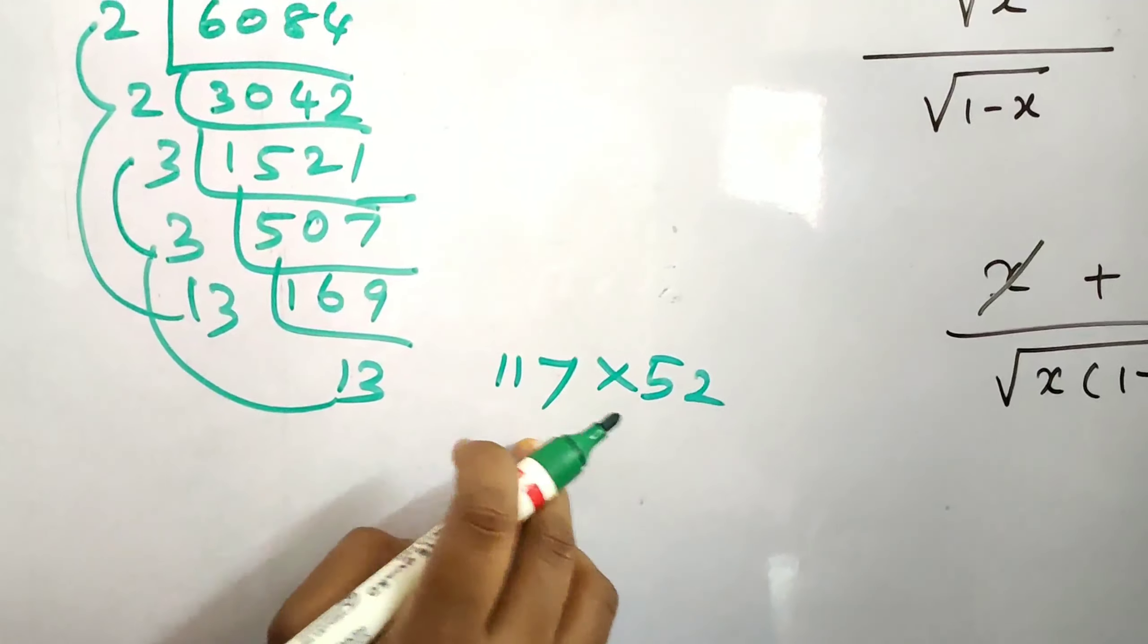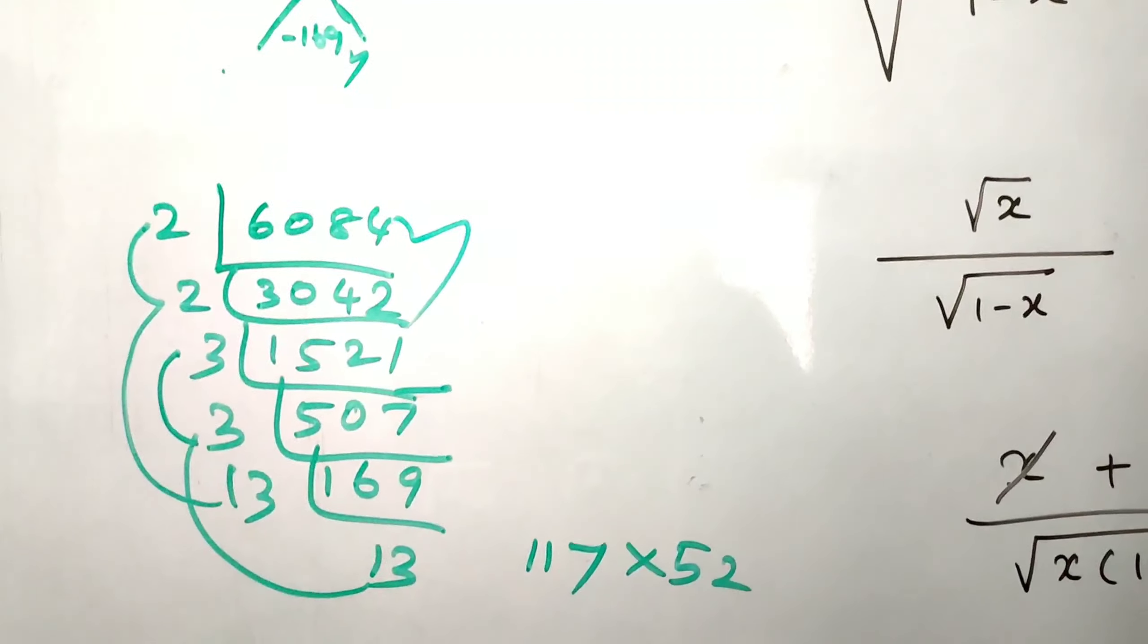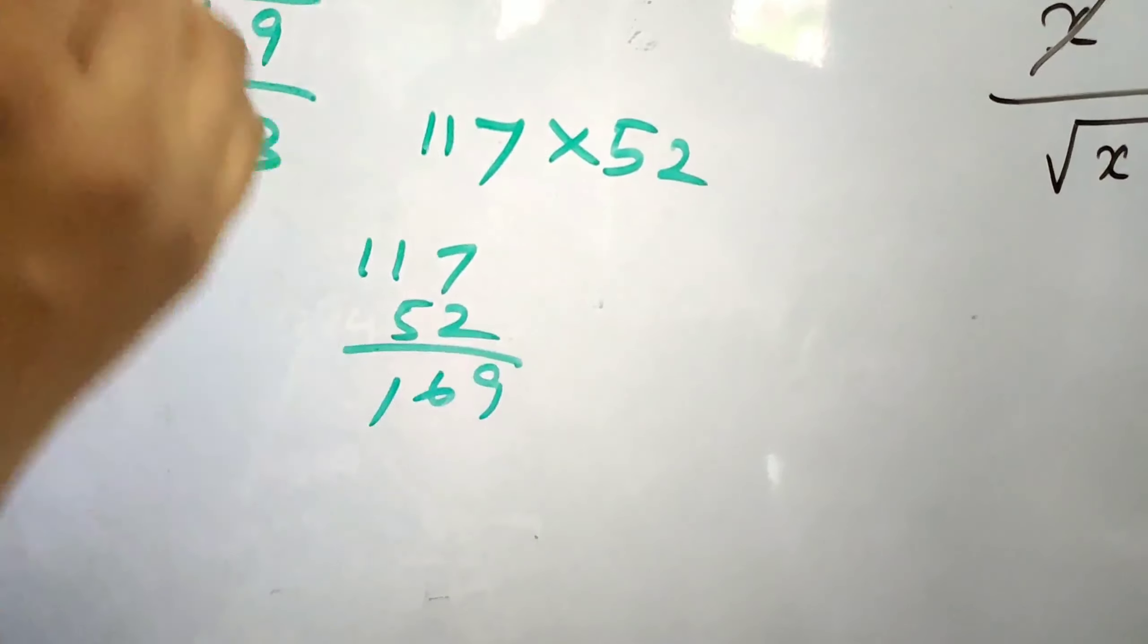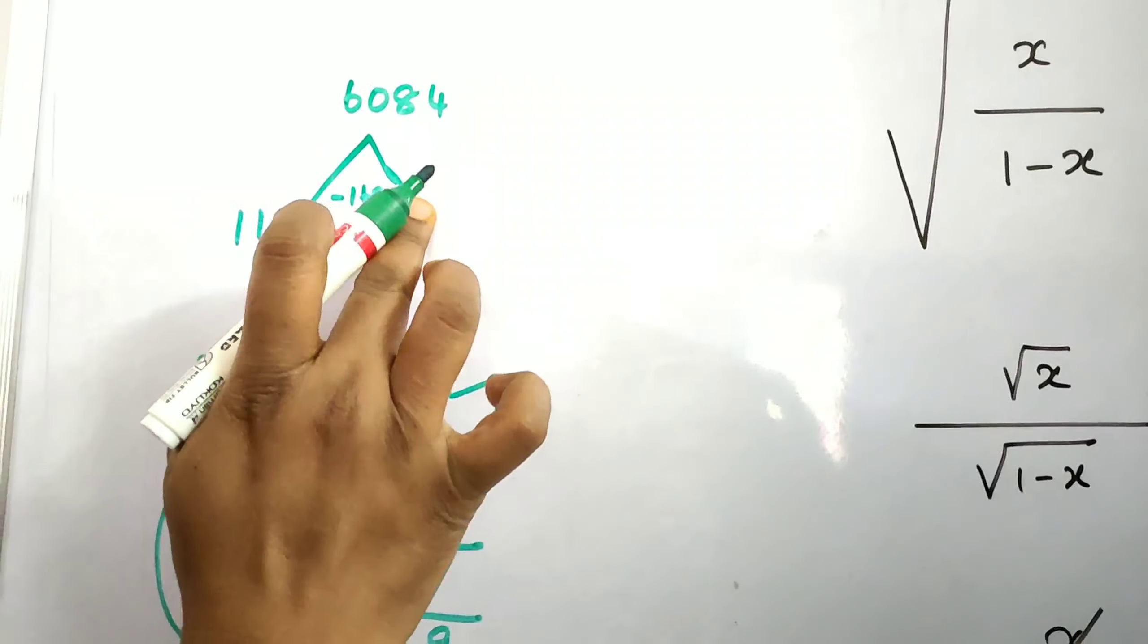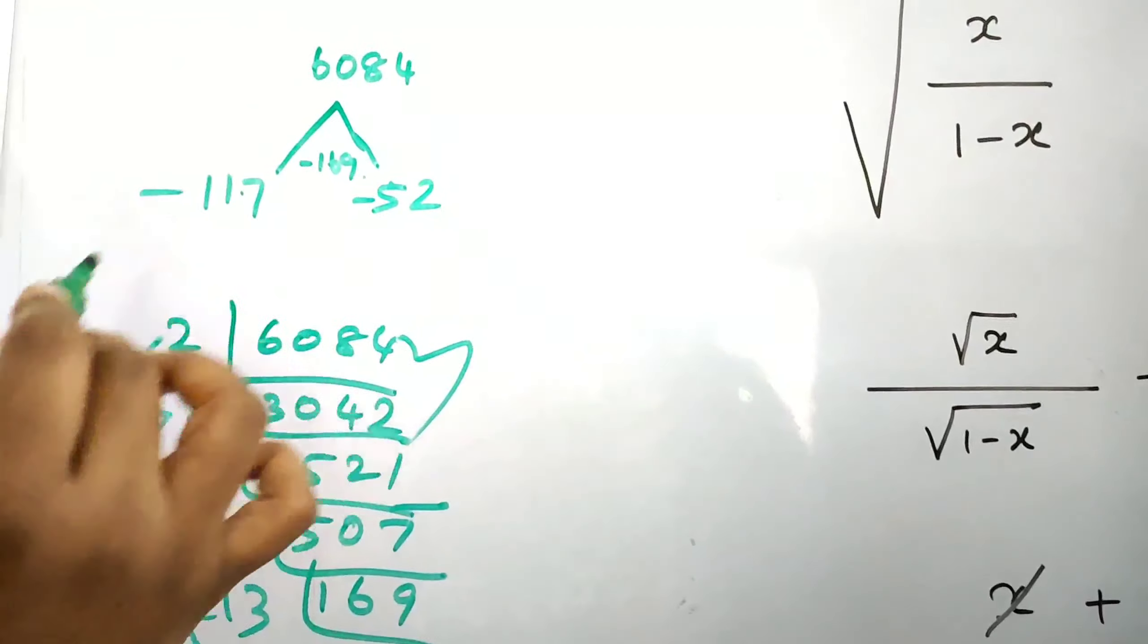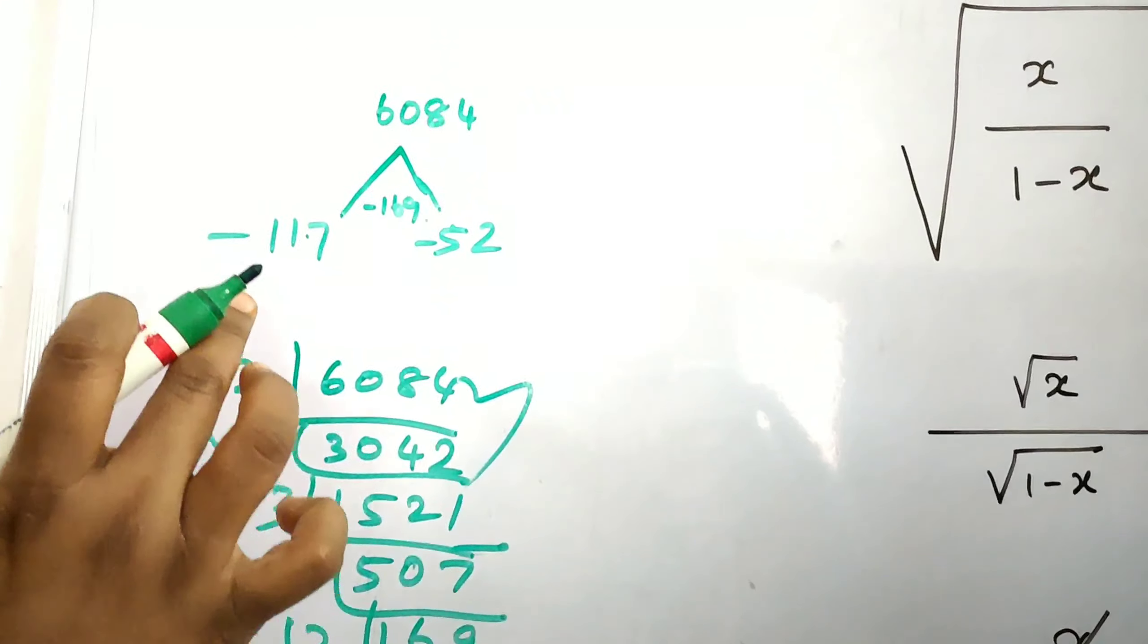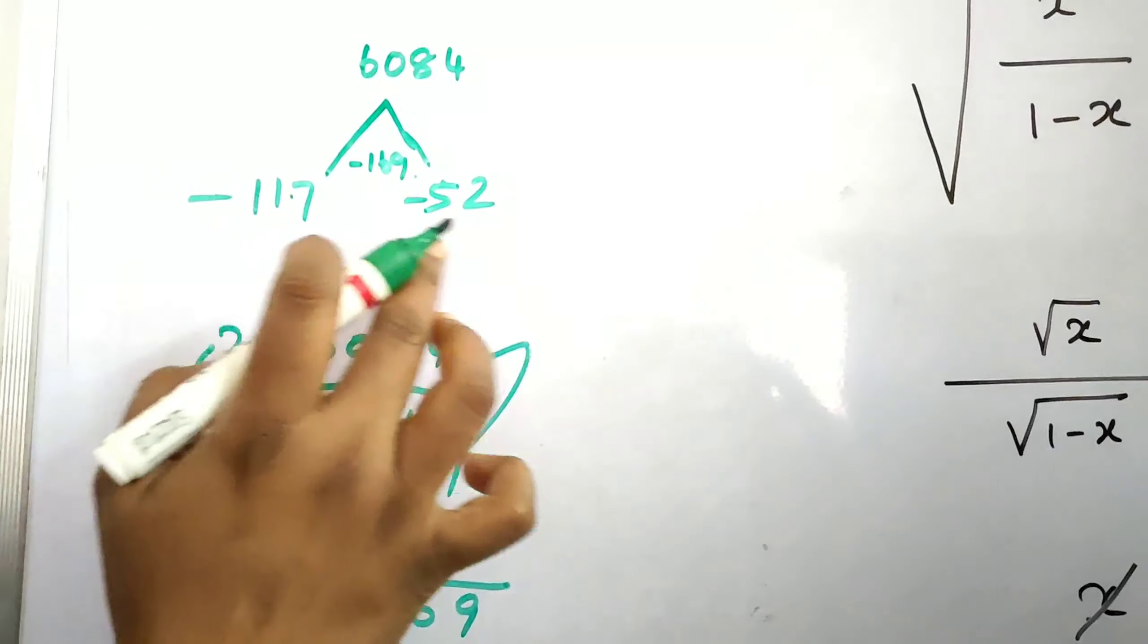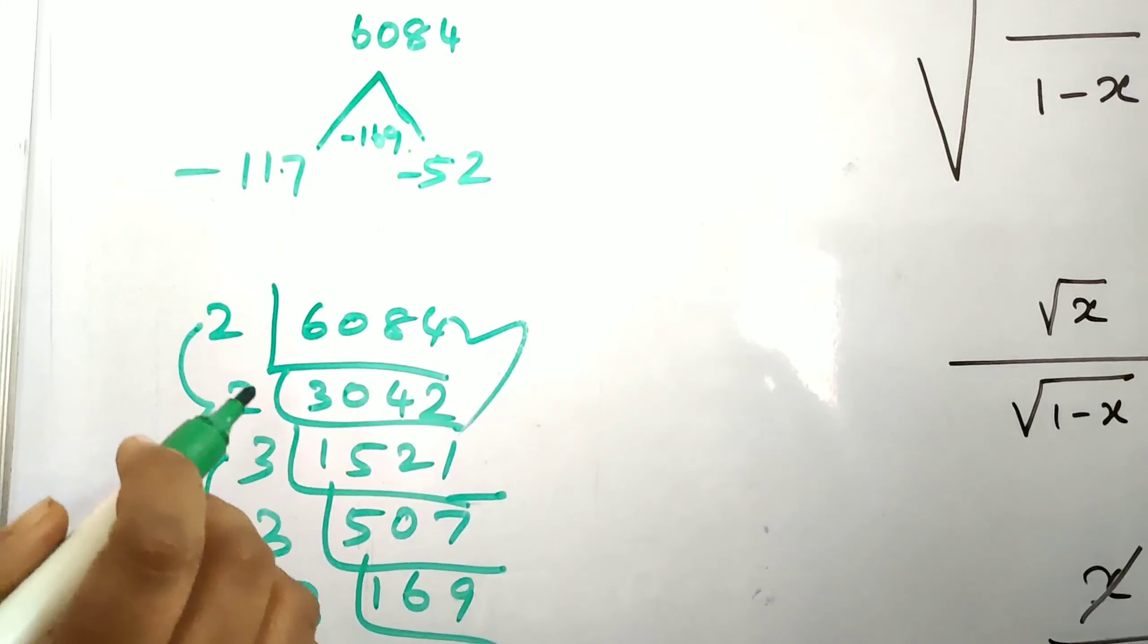This product gives 6084. If you add these two: 117 plus 52 is 169. With minus signs: minus times minus is plus, giving 6084, and minus plus minus is minus 169.